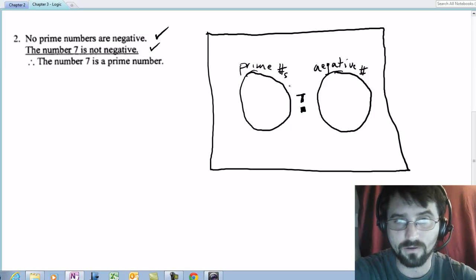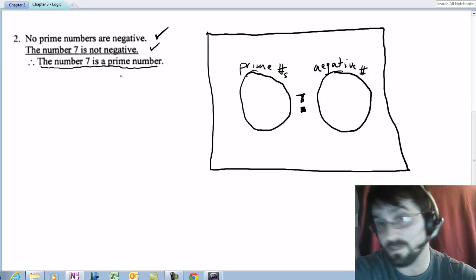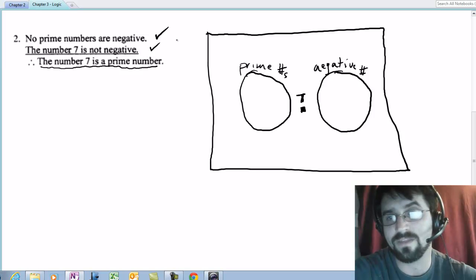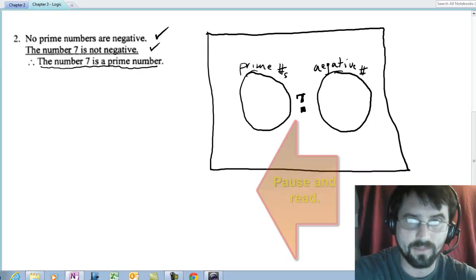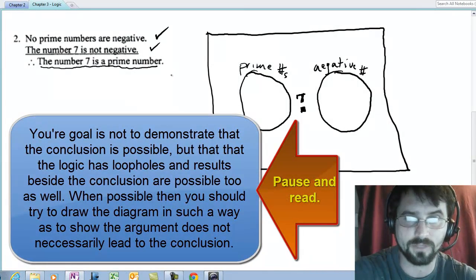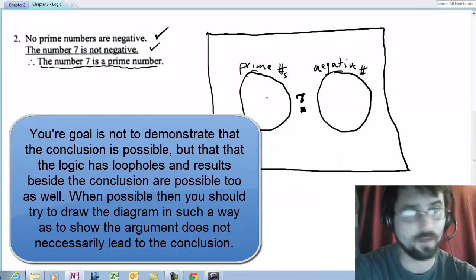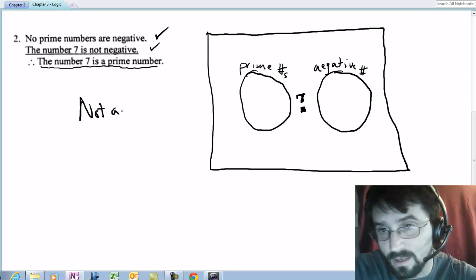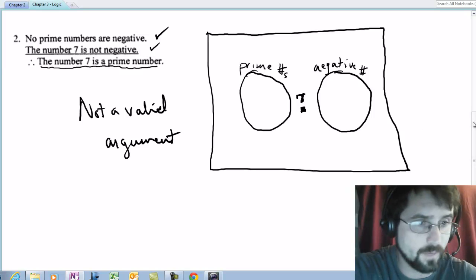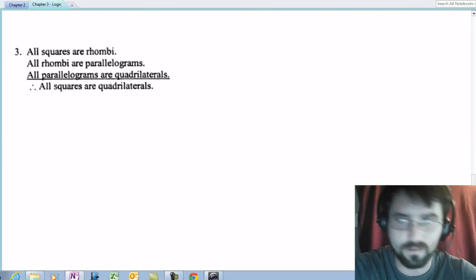Because I want to show that the argument is not valid. Why? Because no prime number is being negative, and the number seven not being negative does not necessarily make seven a prime number. And you can see the conclusion is not part of my picture. Not because the final statement is invalid - the final statement is true - but because the way that they're arguing is not valid. We're looking at if the logic is valid, not if the conclusion is true.